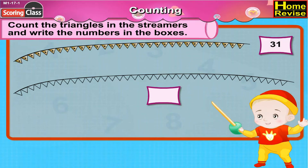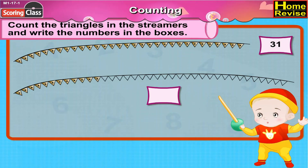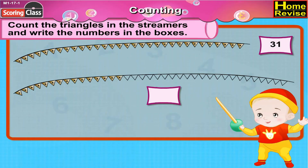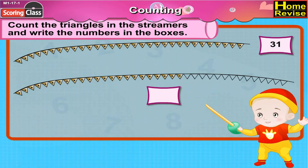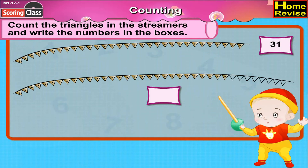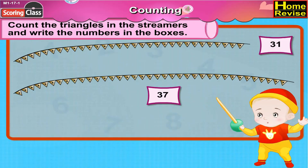Now, let us see the second streamer. 1, 2, 3, 4, 5, 6, 7, 8, 9, 10, 11, 12, 13, 14, 15, 16, 17, 18, 19, 20, 21, 22, 23, 24, 25, 26, 27, 28, 29, 30, 31, 32, 33, 34, 35, 36, 37. So, there are 37 triangles in the second streamer.